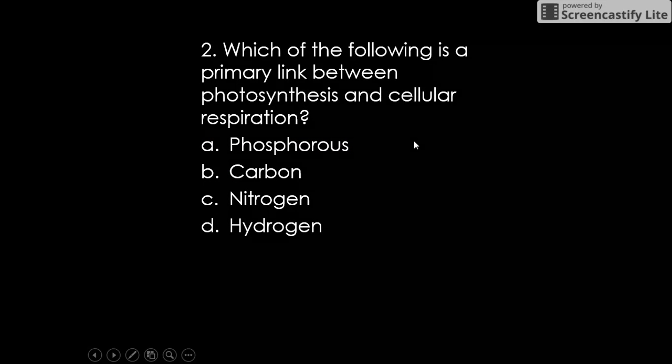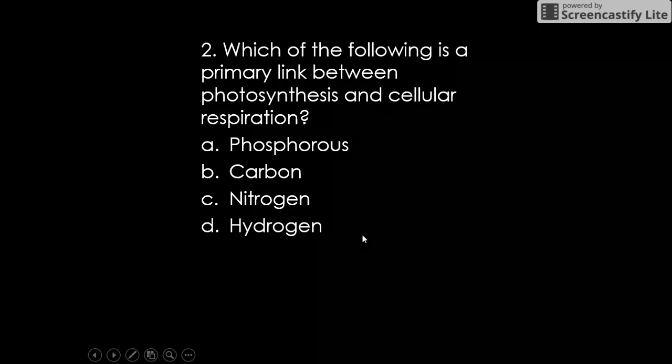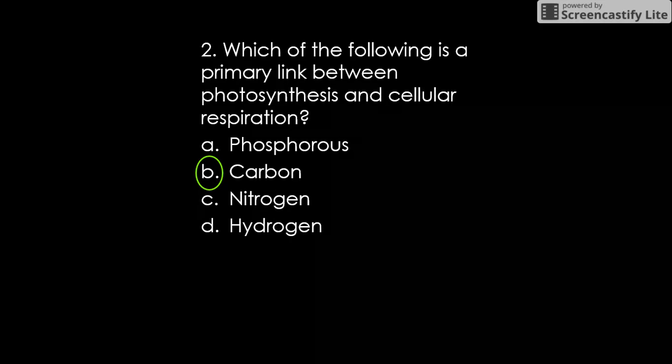Two: which of the following is a primary link between photosynthesis and cell respiration? So of these things, what is the main thing you see being recycled in photosynthesis and cell respiration? If you look at your diagrams, the main word that you see being recycled listed here is carbon. Carbon is the thing that is cycled through, or one of the things that is cycled through of the stuff listed.